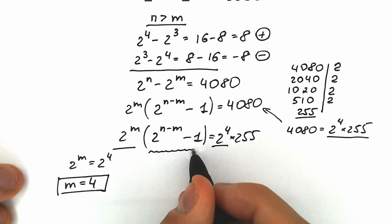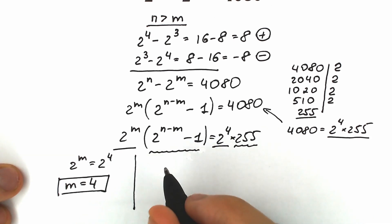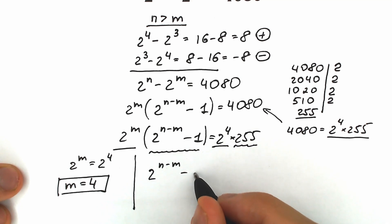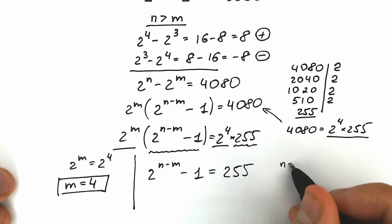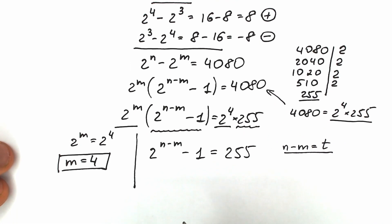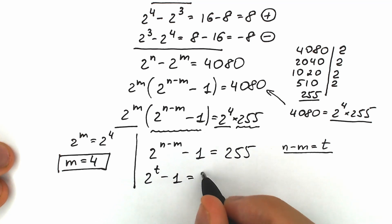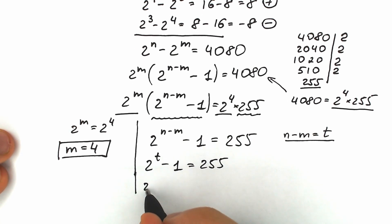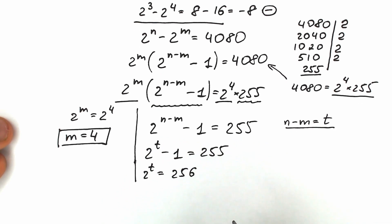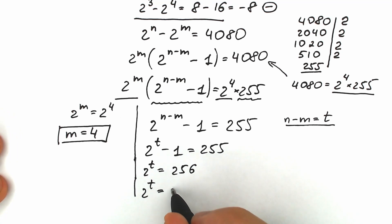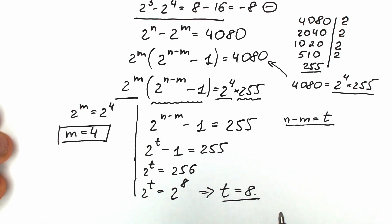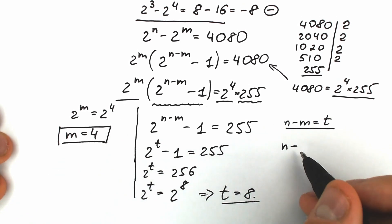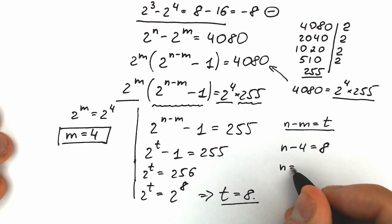We still have the expression inside parentheses equal to 255. So our equation is: 2 to the power n minus m minus 1 equal to 255. Let's use the substitution t for n minus m. So we have 2 to the power t minus 1 equal to 255, which gives 2 to the power t equal to 256, which equals 2 to the power 8. So t equals 8. Since n minus m equals t equals 8, and m equals 4, we get n equals 12.